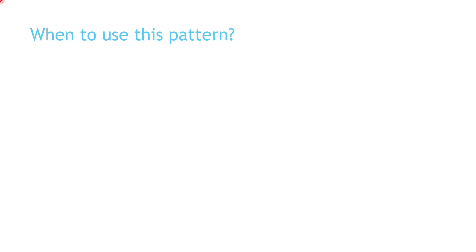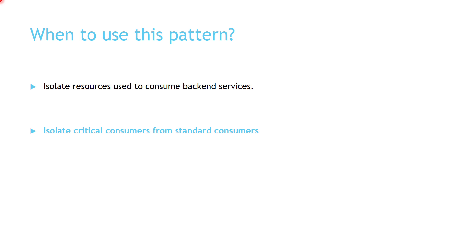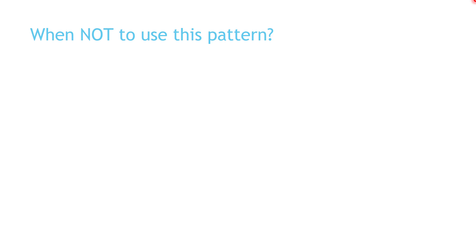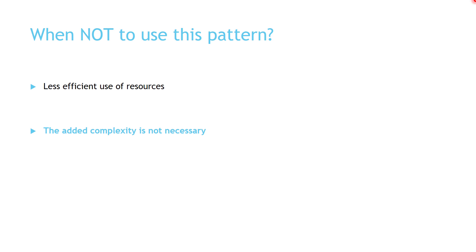Now let's see when you should implement this pattern: when you want to isolate resources used to consume backend services; when you have different tiers of consumers — critical, standard, and free — and you need to isolate between these tiers; and when you want to protect your application from cascading failure or domino effects. You shouldn't use this pattern when isolation between different consumer tiers is not a business requirement. Also, avoid the added complexity if it's not necessary — you should always aim for simplicity over just following or implementing a particular pattern.